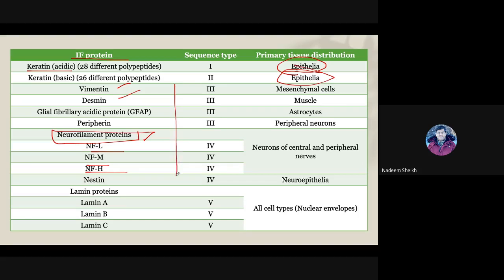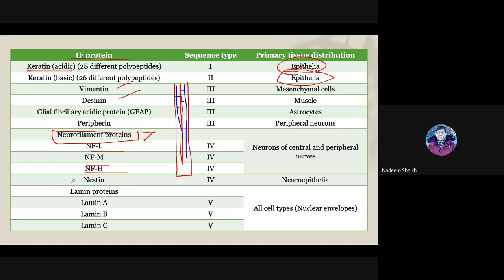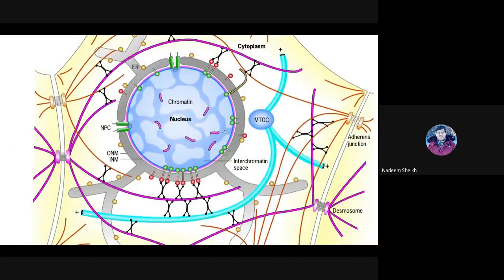Neurofilaments run parallel to microtubules in the axon. If microtubules are shown in red, we can observe that intermediate filaments are present in parallel and are cross-linked by plectins. Class five lamin proteins are part of the nuclear envelope; all other four classes belong to cytoplasmic proteins.